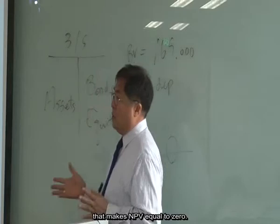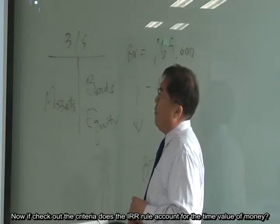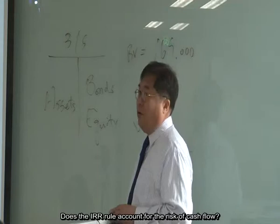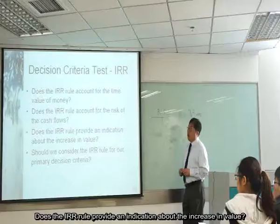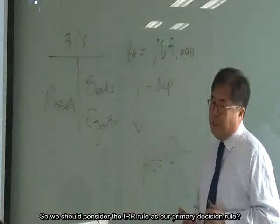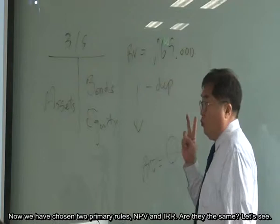Checking the three criteria for IRR: does it account for time value of money? Yes, we discount cash flows. Does it account for risk? Yes, because we compare to the required return. Does it indicate value increase? In a way yes — if the required return is lower than IRR we accept, meaning value is being created. Should we consider IRR for our primary decision criteria? Yes.